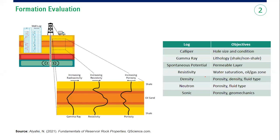Resistivity log helps us identify the oil zone, gas zone, or water zone. The density log tells us the porosity, the density itself, and the fluid type within the reservoir. The neutron log also gives us porosity and fluid type, and we usually combine the density log and neutron log for our analysis. Sonic log is used for porosity analysis and geomechanical analysis.